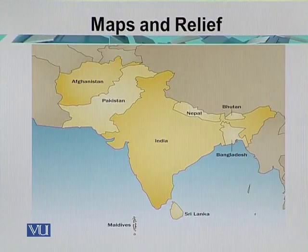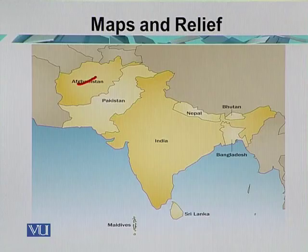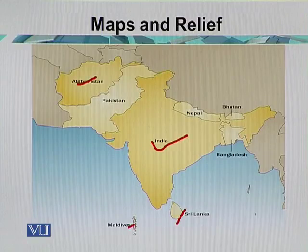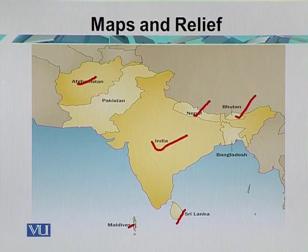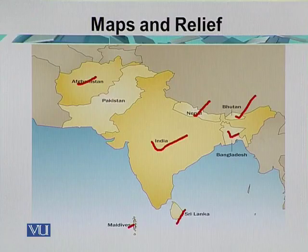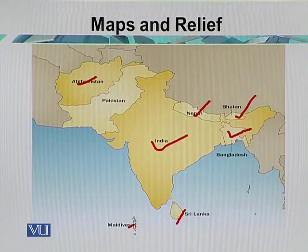The western side of South Asia is covered with Afghanistan. To the south of South Asia are Maldives and Sri Lanka. The central part of South Asia is covered with India, and the northern part has Nepal and Bhutan. The eastern side of South Asia is covered with Bangladesh. These are the eight major countries of South Asia, each with its own political boundary, which is why political maps are very important.